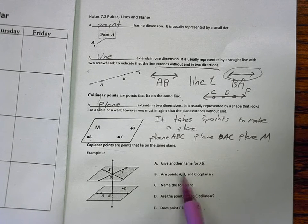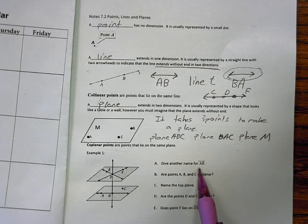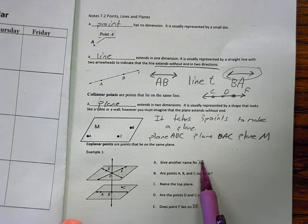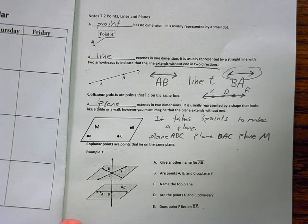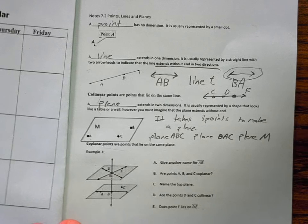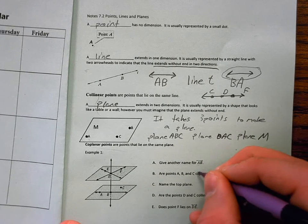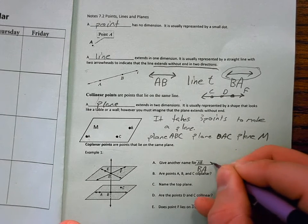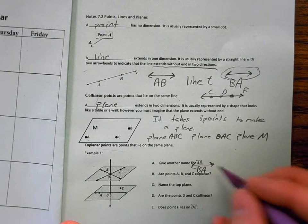But it does matter if you're talking about different planes. So let's look at this example. Give another name for the line. You can see that it has two arrows here. AB. What's another possible name for AB? BA. Make sure you draw the arrows over the top. So critical.